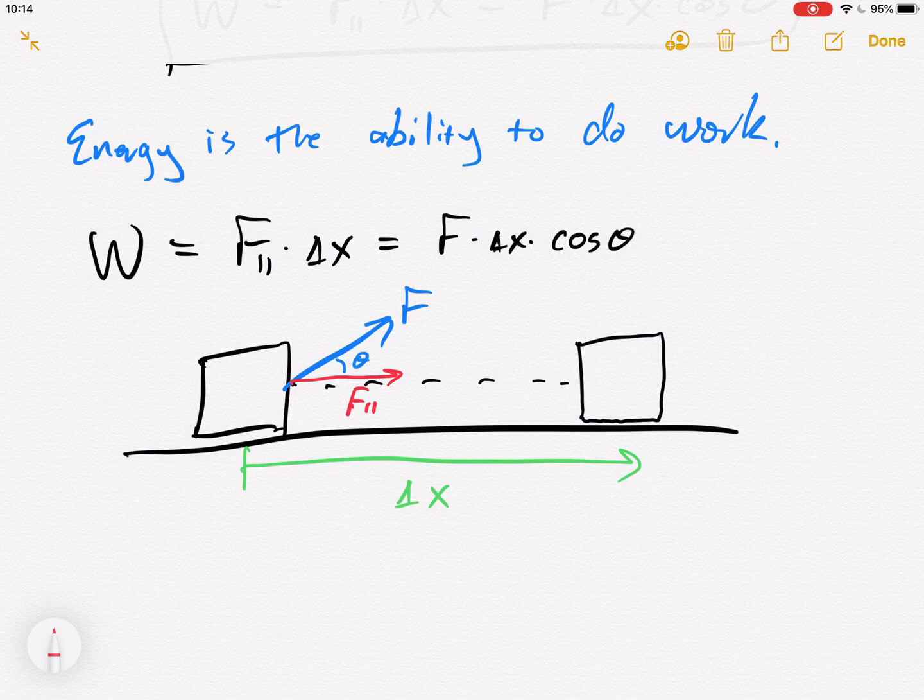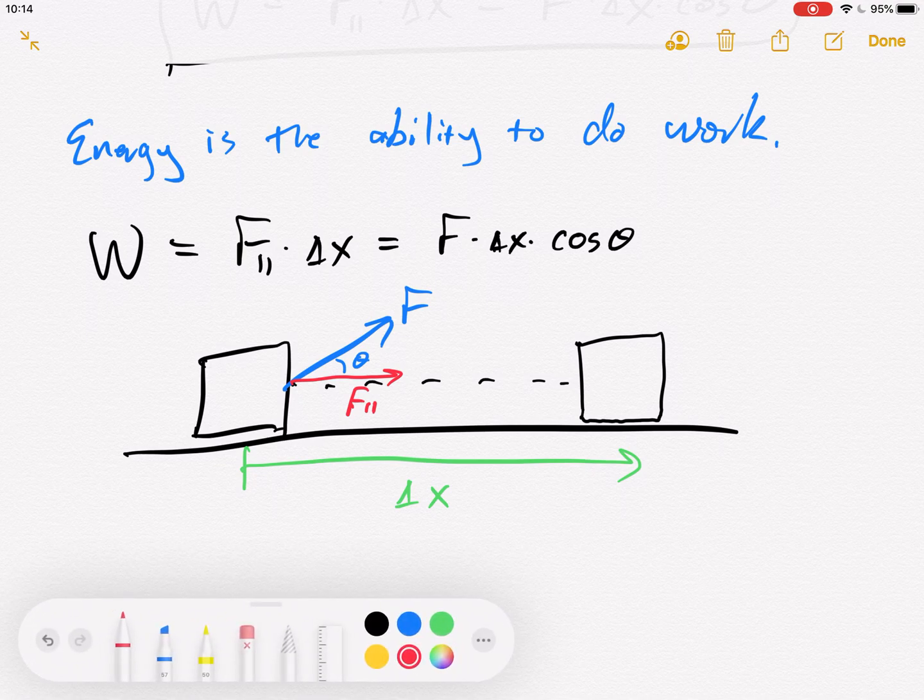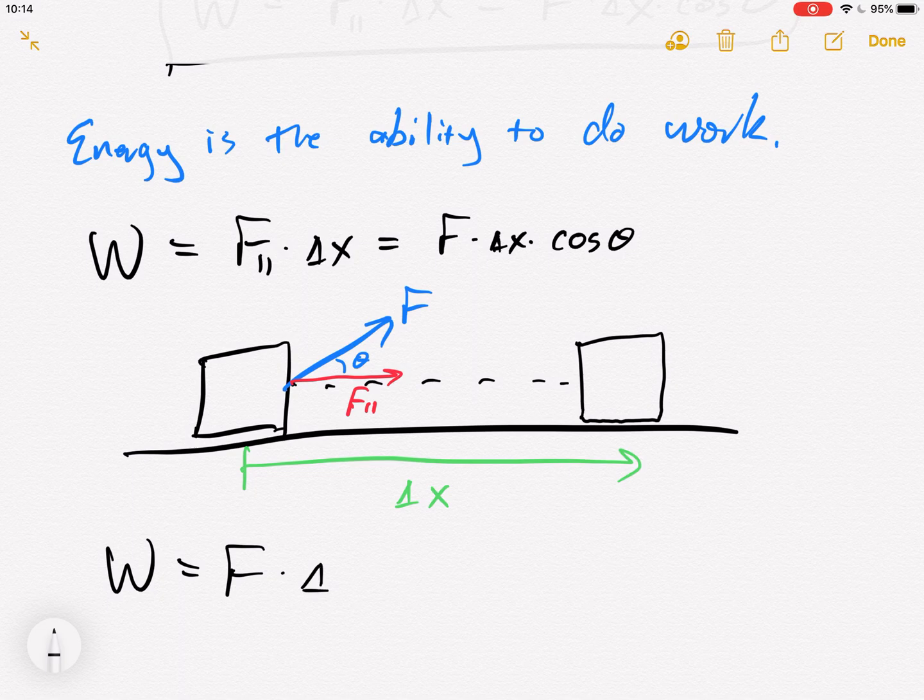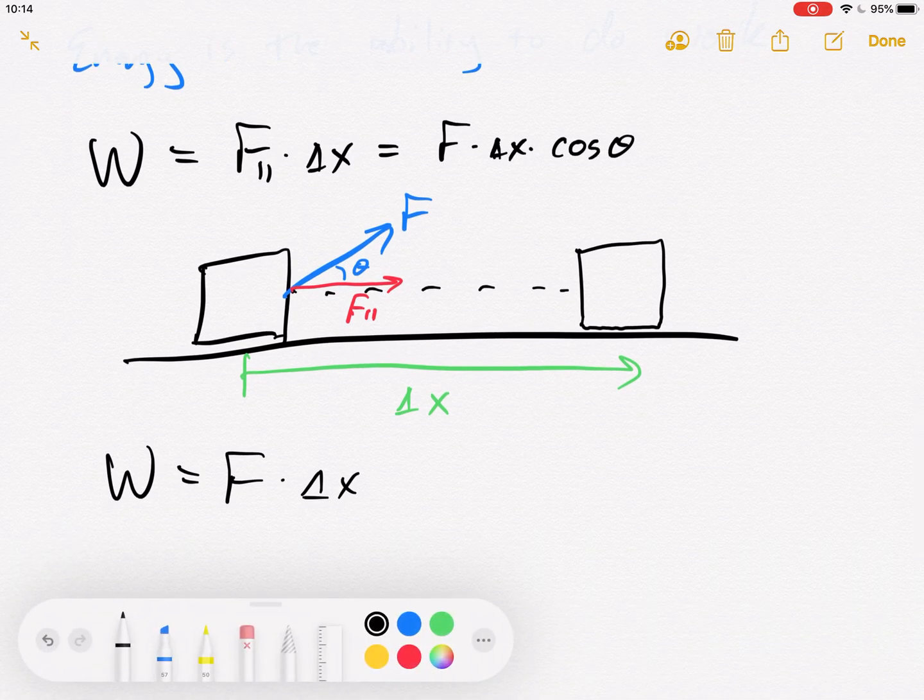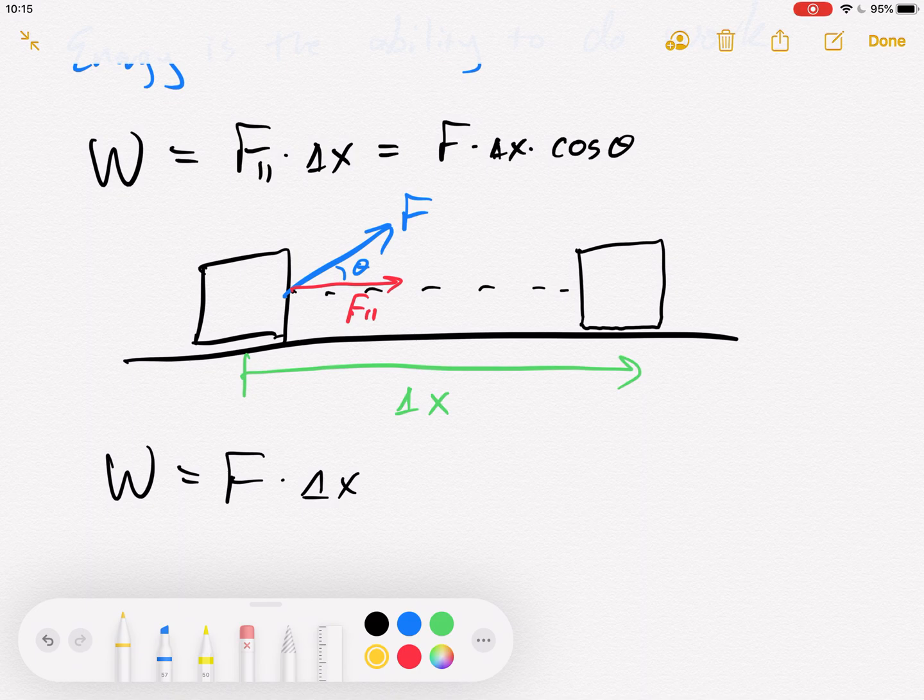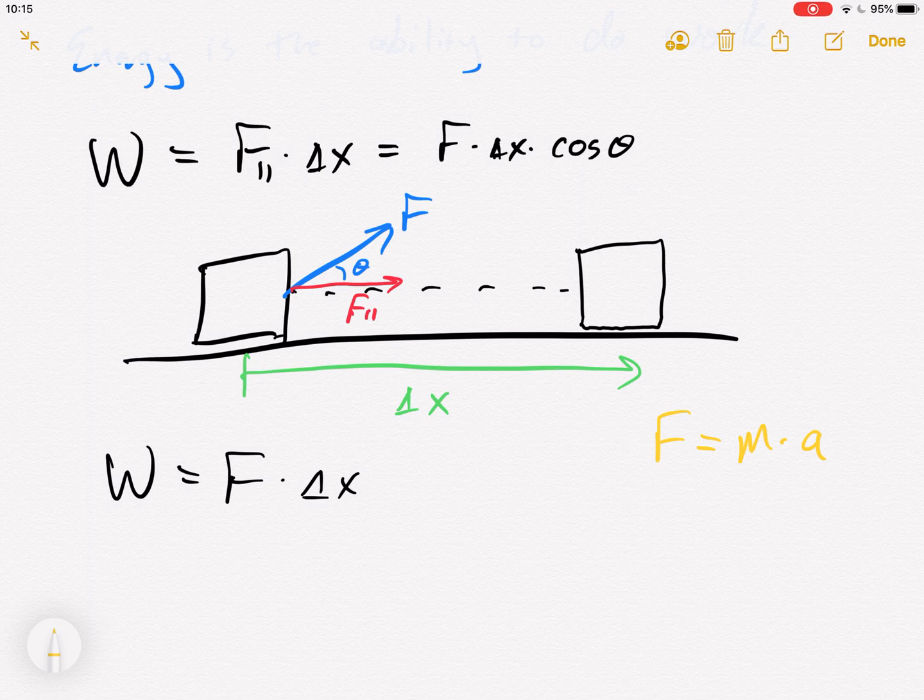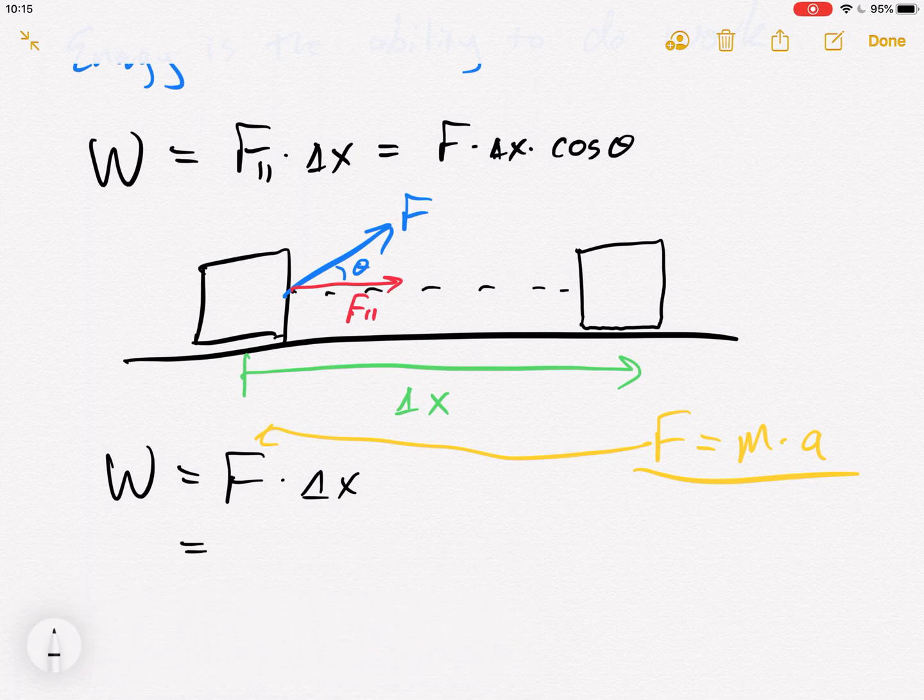Let's start with that definition. Let's say work equals F delta x. And if I recall, force is mass times acceleration. So dynamics tells me force equals mass times acceleration. So I can replace F with mA: m times A times delta x.